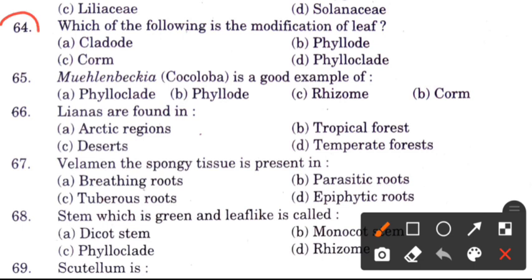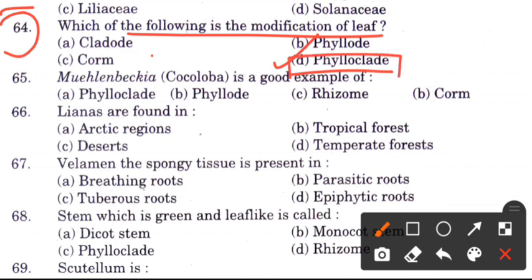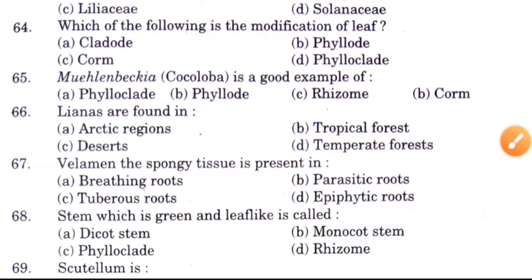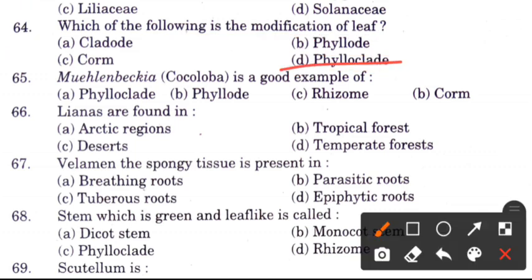Question 64: Which of the following is the modification of leaf? Options are cladode, phylode, corm, and phylloclad. The answer is B, phylode, because phylode is a leaf modification.